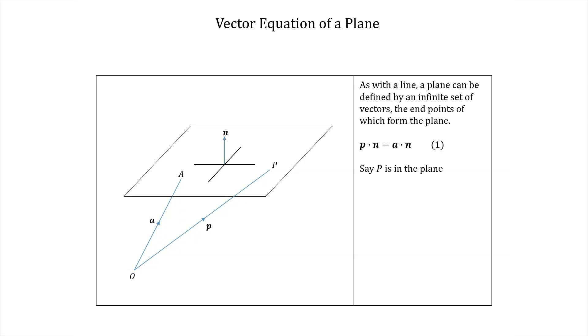Then the vector from a to p clearly lies in the plane. That's this vector here. This means that ap·n is 0 since they must be perpendicular and perpendicular vectors always have scalar product 0.